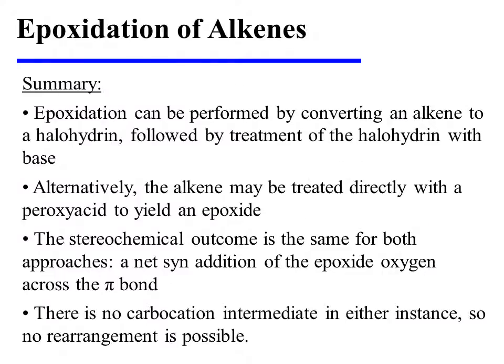In summary, epoxidation can be performed by converting an alkene to a halohydrin followed by treatment of the halohydrin with base. Alternatively, the alkene may be treated directly with a peroxyacid to yield an epoxide. The stereochemical outcome is the same for both approaches — a net syn addition of the epoxide oxygen across the pi bond. There is no carbocation intermediate in either instance, and so no rearrangement is possible.